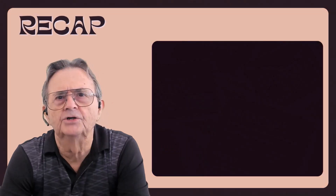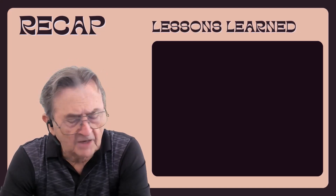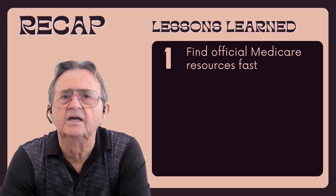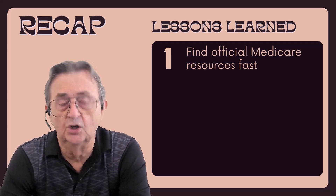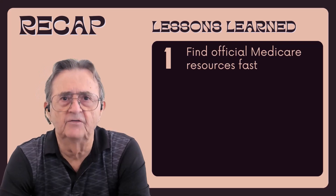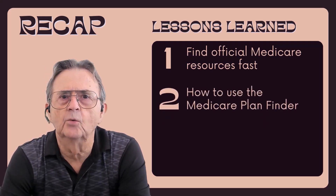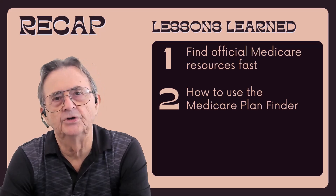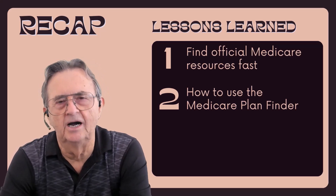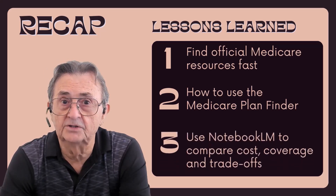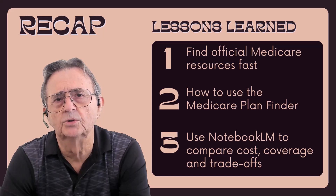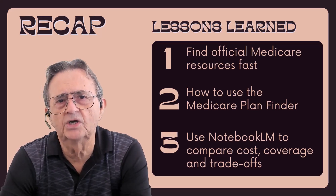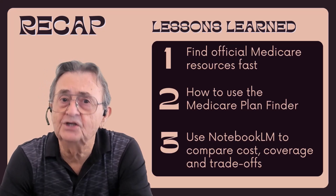So there you have it. We just used free AI tools to do what would normally take you an entire weekend of frustration and several phone calls to confused insurance agents. Let me recap what we learned today. First, you learned how to use Perplexity to cut through the internet noise and find official Medicare resources fast — no ads, no scams, just the actual government tools you need. Second, you saw how to work the Medicare plan finder systematically: entering your zip code, filtering for your doctors, and narrowing down real options. Third, and this is the big one, you learned how to feed those plan documents into Google's Notebook LM and ask intelligent questions that compare costs, coverage, and trade-offs specific to your situation.